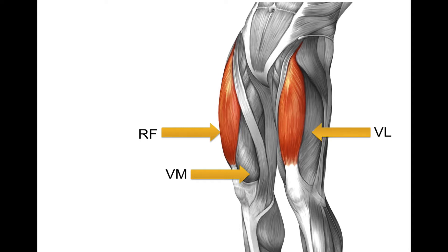Then we have vastus lateralis, located laterally in the muscle group. And lastly, we have vastus intermedius, which is actually located deep to the rectus femoris. So if you pull the rectus femoris to the side, you'll be able to visualize the vastus intermedius deep to that muscle. Collectively, these muscles join up and form a tendon called the quadriceps tendon that moves through the patella and ultimately attaches via a ligament called the patellar ligament to the tibia.